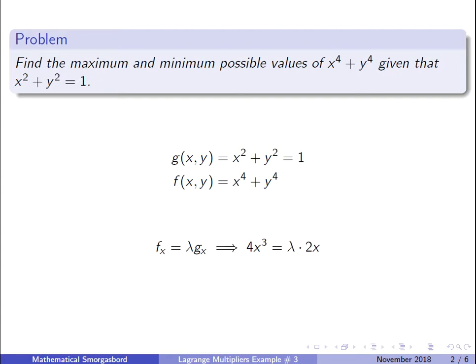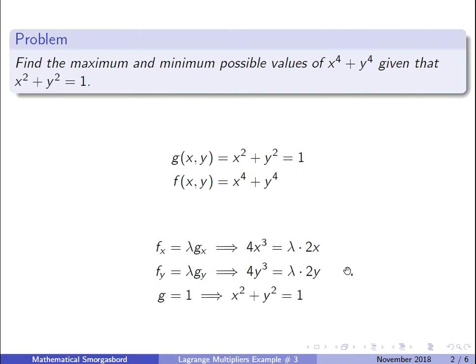The first step: we take the first partial with respect to x, and we get 4x³ = λ · 2x. The next step, we take the partial with respect to y, and we get 4y³ = λ · 2y. And we remember that our constraint is x² + y² = 1. These three equations together are what we'll use to solve the system.